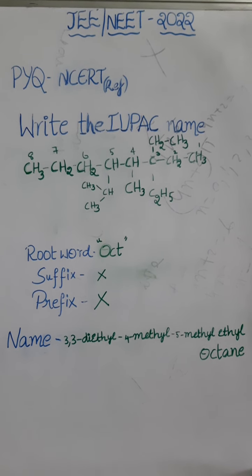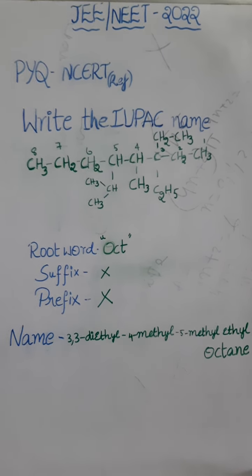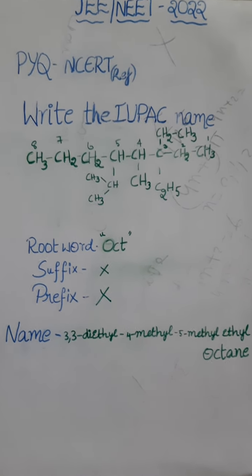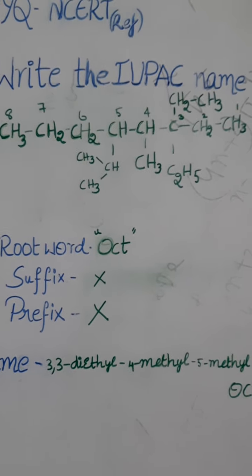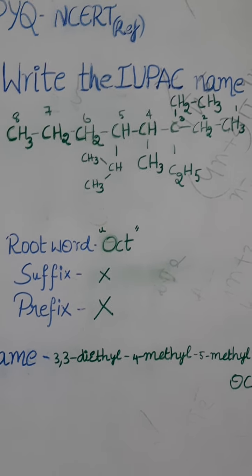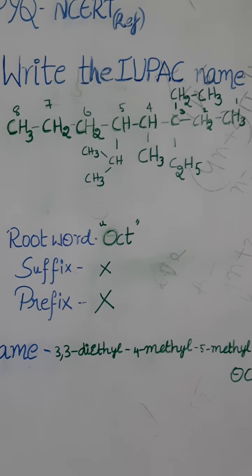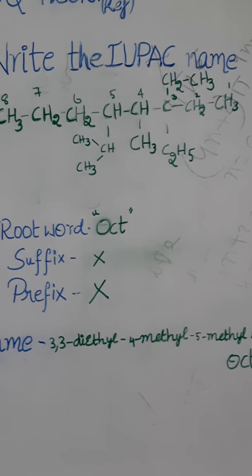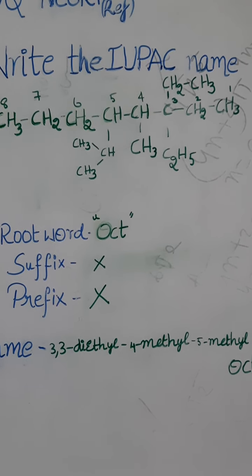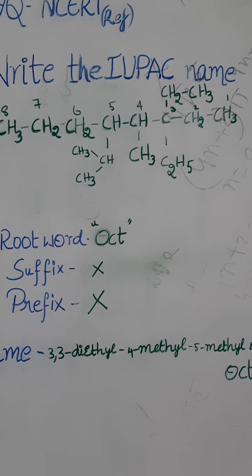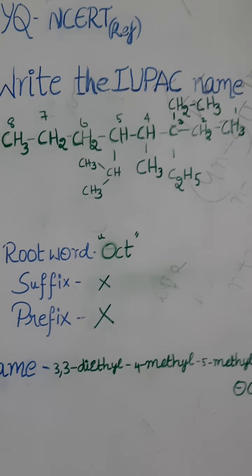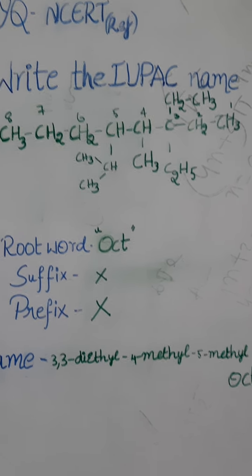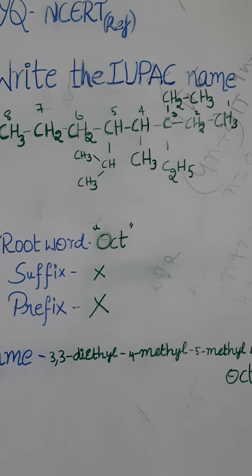And now the next question is taken from NCERT reference. Here write the IUPAC name of the given compound. So now let us observe this compound. First the main thing we have to do is identifying the parent chain. It is a difficult task here to identify the parent chain, but I have written in a clear manner by giving numbering to it. So we observe that 8 carbon atoms are present in the longest chain, so we consider it as a parent chain.